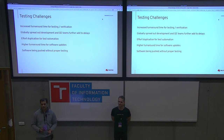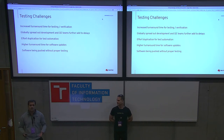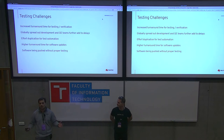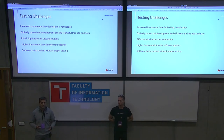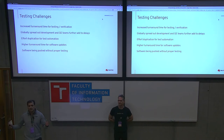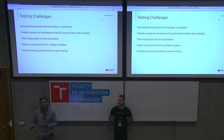First, there's increased turnaround time for testing and verification because they are out of phase. This is especially exacerbated with globally spread-out teams — in our case, development and QE teams are spread across North America, EMEA, and APAC. We also have issues around effort duplication with test automation. Development teams did their own test automation around unit tests and some integration testing, while QE teams built their own test cases and automation around integration, system, end-to-end, and UI testing — but they existed in separate worlds and completely duplicated work. All of this results in higher turnaround time for software updates and releases if you want full automation and quality assurance testing.